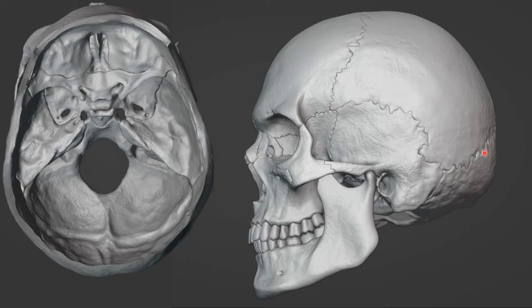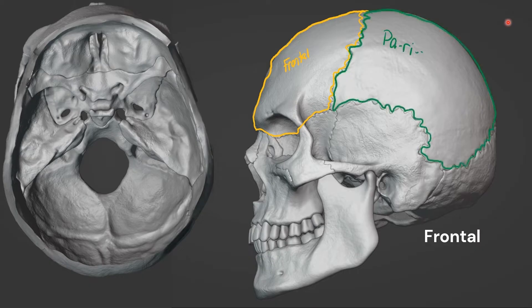In the area of your forehead, you have your frontal bone. When you cross this suture — the coronal suture — now you're in the parietal bone. And even though we can't see it from this view, there's a suture right in the center of your head called the sagittal suture that separates the two parietal bones.